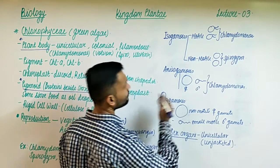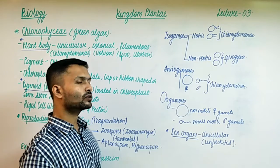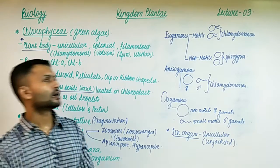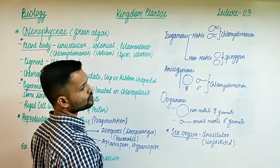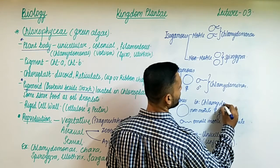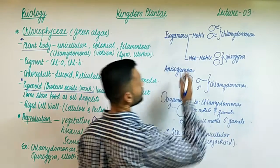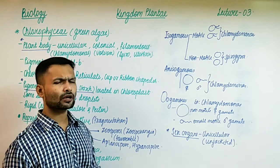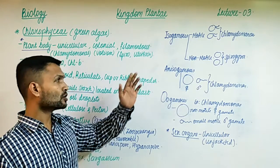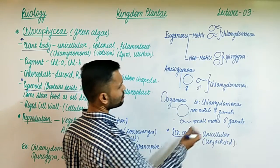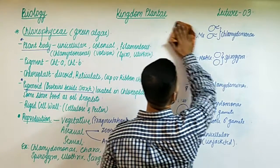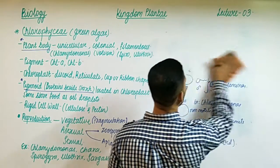An important feature to remember: the sex organs formed in algae are all unicellular and unjacketed - not covered with anything, just a single cell. Chlamydomonas shows all three modes: isogamous, anisogamous, and oogamous. Volvox follows the oogamous format. Chlamydomonas is the only alga showing all three types of sexual reproduction.